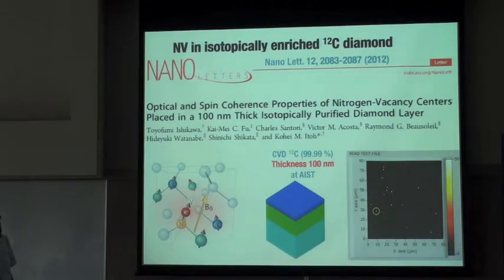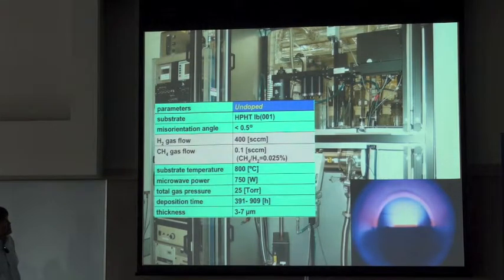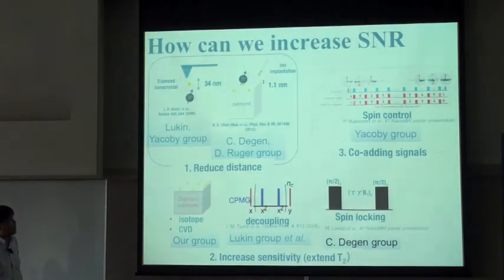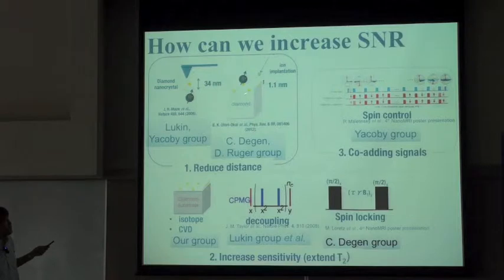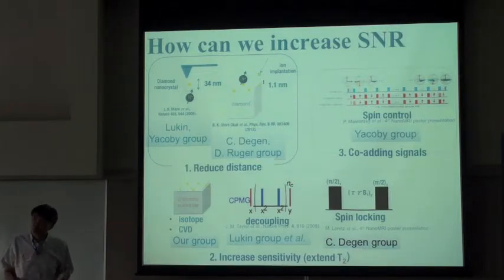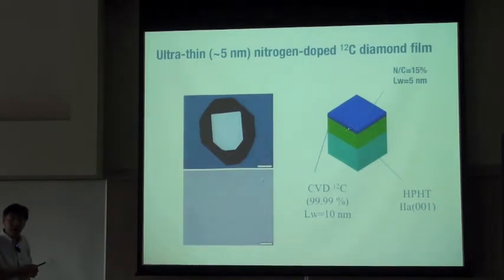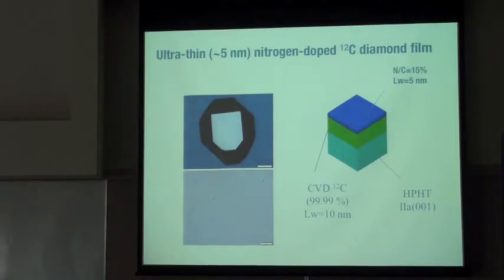Our approach is basically the same, but we are focusing on developing a better sample. The sample has been grown at AISD in Tsukuba using a CVD technique. The name of the game is to place the NV center as close as possible to the surface so that whatever we put onto the surface can be detected, because the dipolar coupling between the nuclear spin on top and the NV electron spin falls down with the inverse of R cubed — the distance cubed. So we fabricated a 5-nanometer thin, isotopically enriched carbon-12 diamond film, and we attempted to form NV centers successfully in such a thin film.